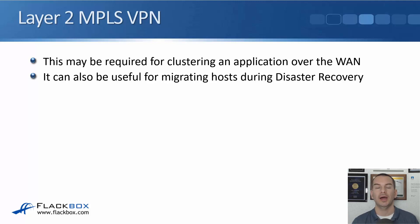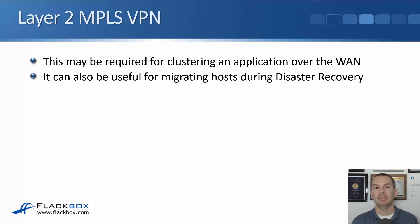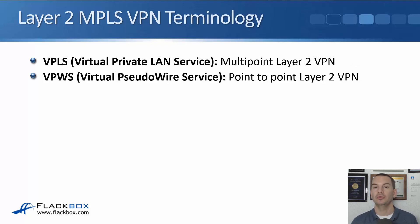Some reasons to use a Layer 2 MPLS VPN: you may want to cluster an application over the WAN where all servers need to be in the same IP subnet. For example, a server at 10.0.0.1 and another at 10.0.0.2 would normally need to be on the same LAN, but with a Layer 2 MPLS VPN you can put them in different sites for redundancy. Another use case is disaster recovery — your main site is Layer 2 adjacent to the disaster recovery site, making it easy to migrate servers across if a disaster occurs because they can keep their same IP addresses.